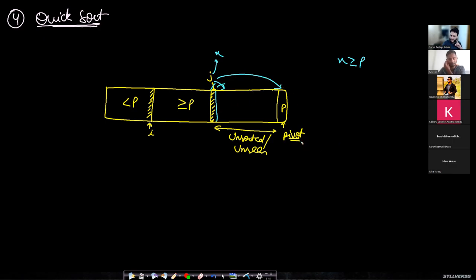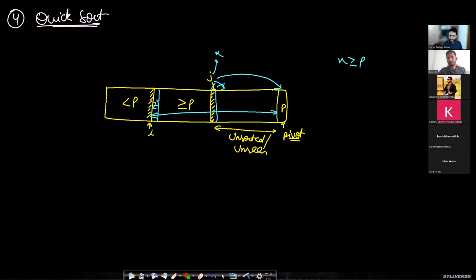Once the entire parsing is done and you've reached the pivot element, you break out. You know where the pivot has to be placed: the entire parsed region belongs to greater than or equal to p, and the other region to less than p. p has to come between these two regions. Using the same swap technique, swap the i+1 element (say z) with p — p comes into position, z moves to the second region, and this makes sense because z was from the greater-than-or-equal-to-p region.